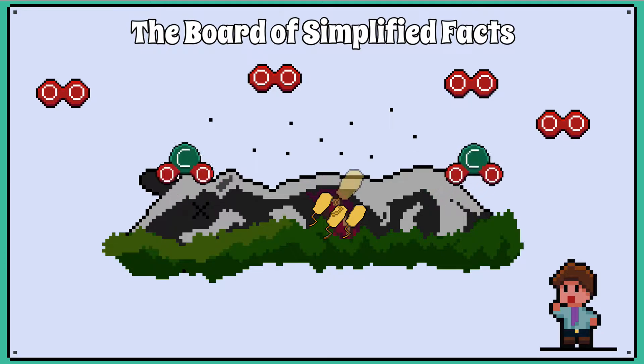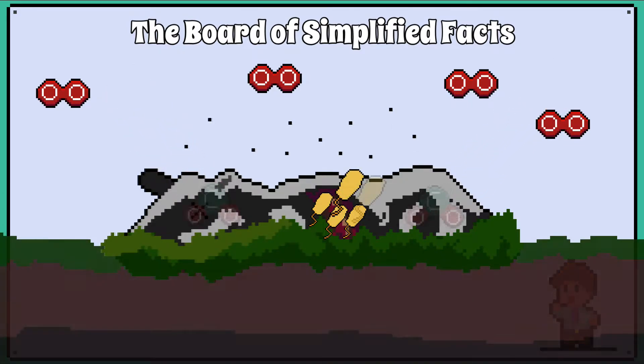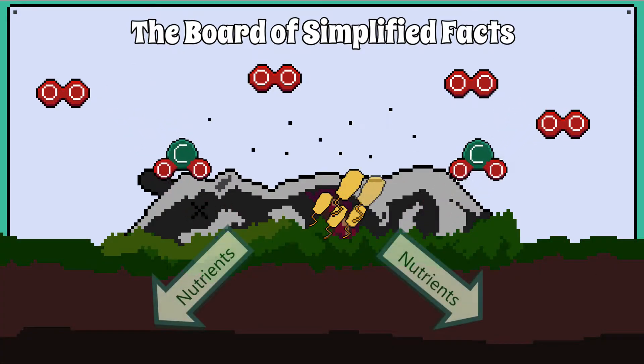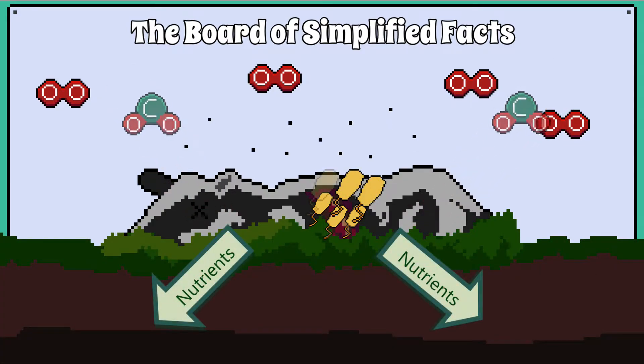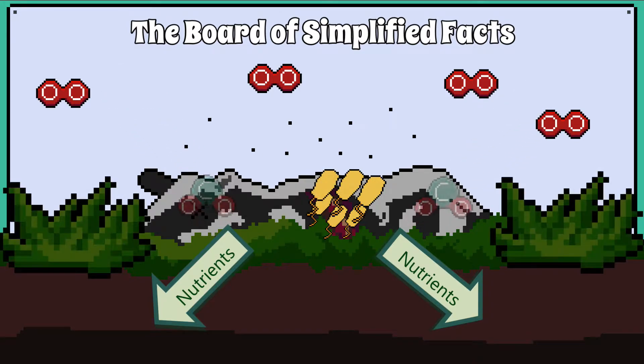Decomposition is important because it returns materials that the once living organism took from the environment so other organisms can use them.